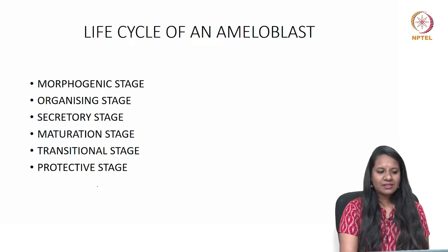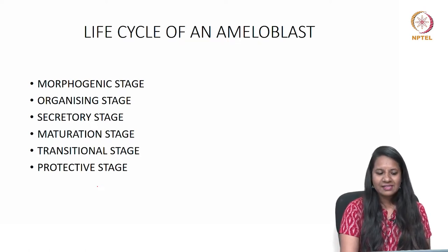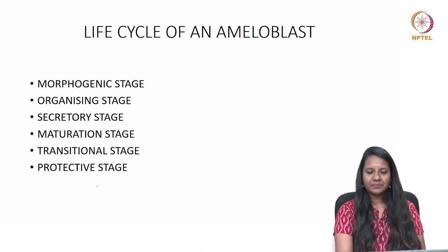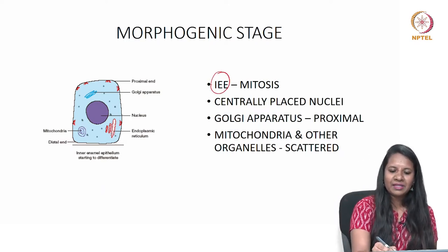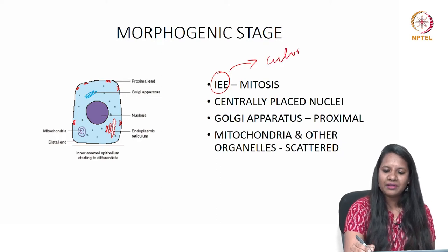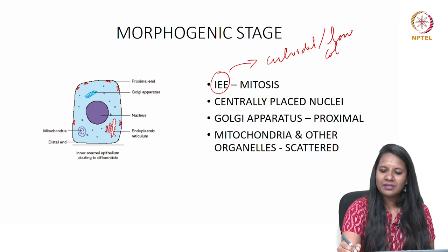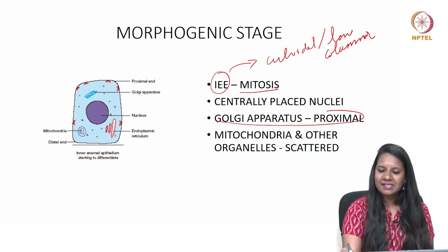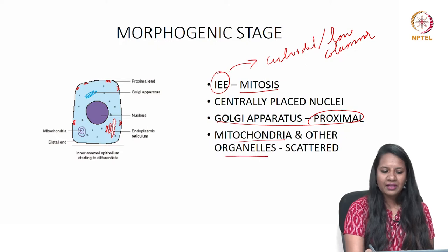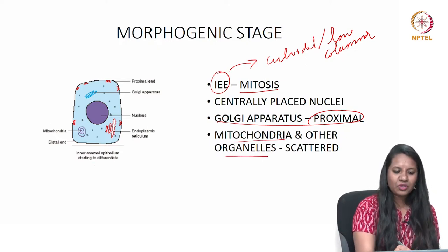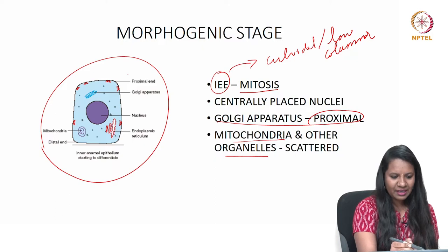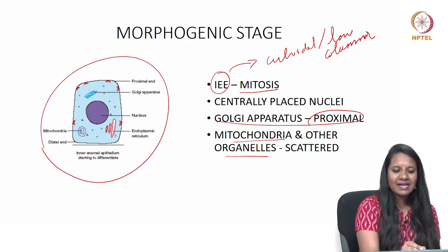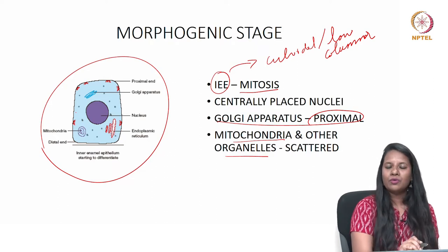The life cycle of an ameloblast consists of morphogenic, organizing, secretory, maturation, transitional, and protective stages. In the morphogenic stage, the inner enamel epithelial cells are either cuboidal or low columnar with centrally placed nuclei and undergo mitosis. Golgi apparatus is seen in the proximal area and mitochondria and other organelles are scattered. The ameloblast is either cuboidal or low columnar in size at this stage.